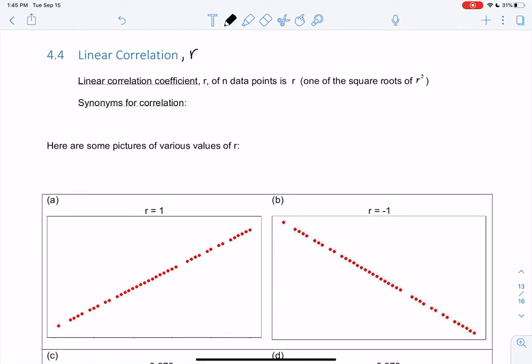So linear correlation. Linear correlation is the R value on the calculator, and it's one of the square roots of R squared. So if we square root R squared, it could be positive or negative. We may or may not have heard the word correlation before. Some other similar words could be relationship, connection, association. Correlation basically tells us if there's a relationship, and if there is, it'll tell us how strong.